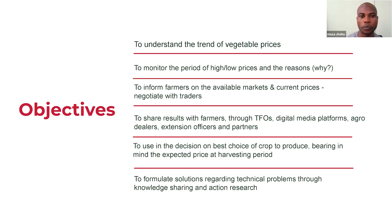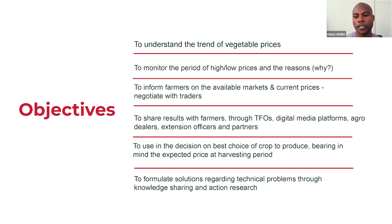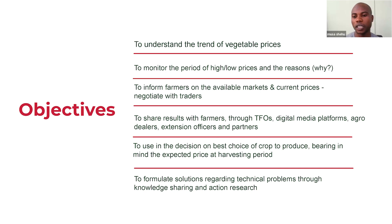The objectives of collecting this information are: to understand the trend of vegetable prices — how prices fluctuate within the year — and to monitor the period of high and low prices and understand the rhythm behind that. Why is the price high in this period and low in another? And to inform farmers on the available markets and current prices, enabling them to have negotiating power with traders. This result is also shared with farmers through TFOs or the general public via media platforms, agro-dealers, extension officers, and other project partners.